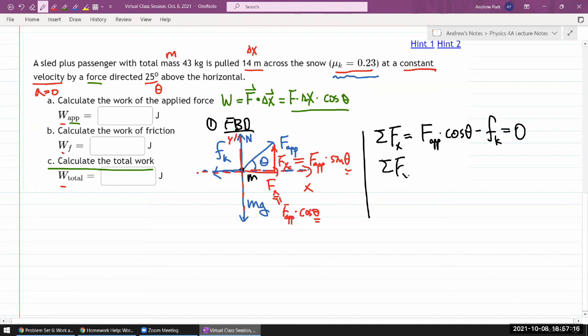Net force in the y direction is going to be, I have normal force plus the y component of applied force times the sine theta, and then I have gravity pulling it down minus mg, and that's going to be zero again because vertically it's not accelerating either. So before I close off my list of equations, I should check how many unknowns I have. I have applied force, that's an unknown, and I have friction force, that's also an unknown, and I have normal force, that's also an unknown. So I have three unknowns, two equations.